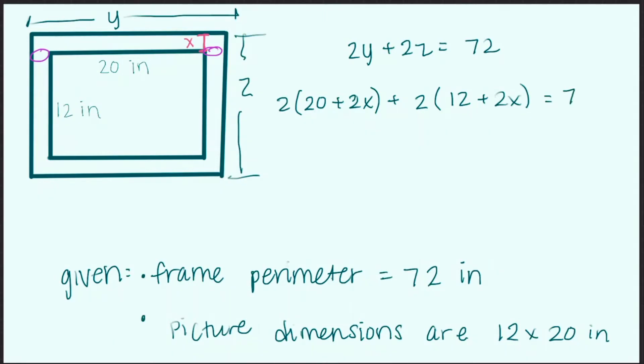We know that equals 72. So if we write that out, we get 40 plus 4x plus 24 plus 4x equals 72. 64 plus 8x equals 72. 8x equals 8. And our final answer, x equals 1.